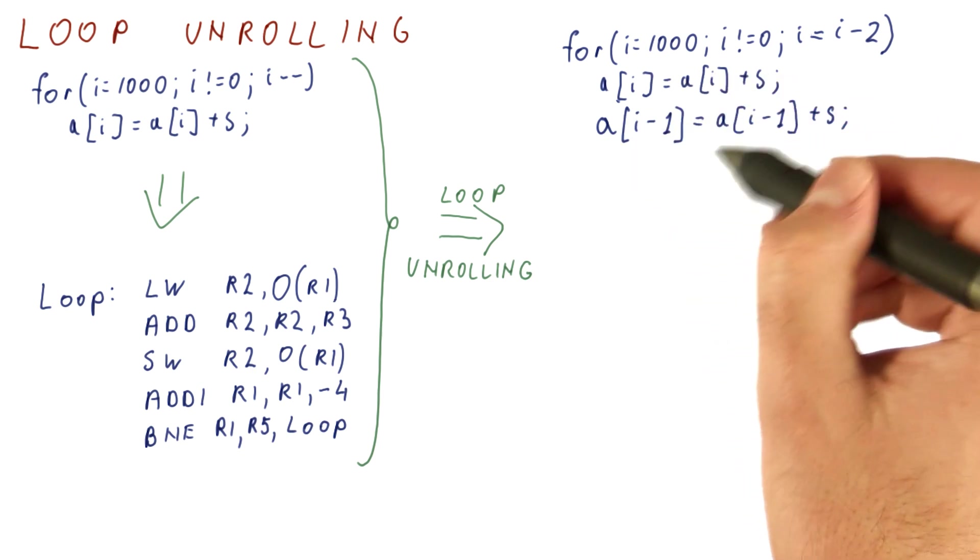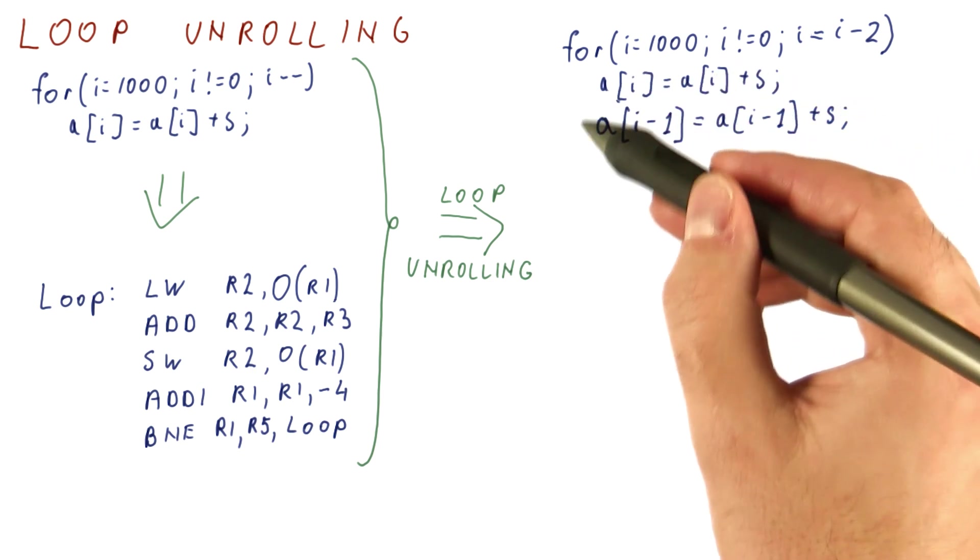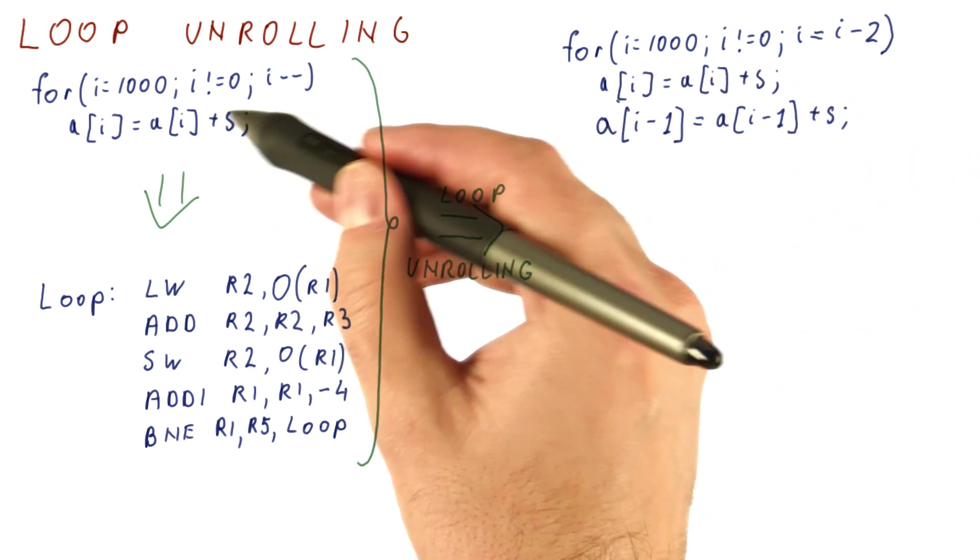And now we have a new loop that has half as many iterations, each of which is doing the work of the two original iterations.